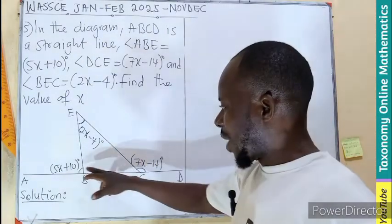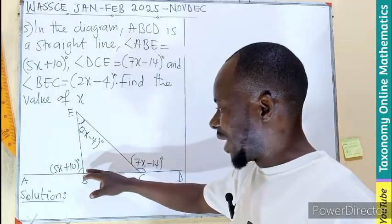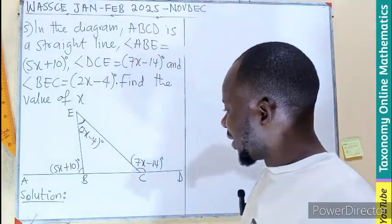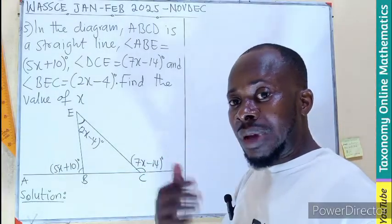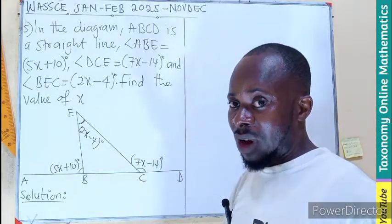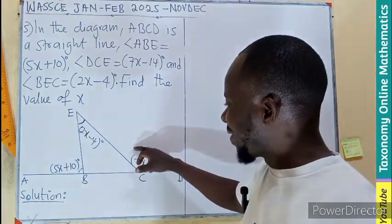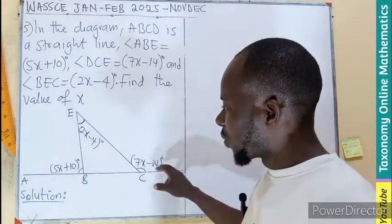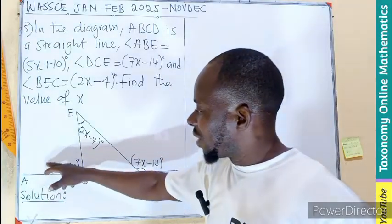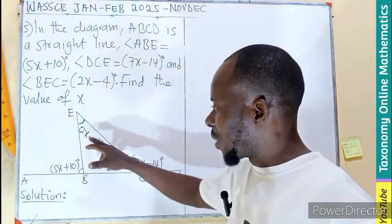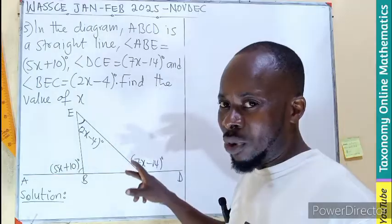Now I can find this. I can also find this since this angle and this are on a straight line. Remember also we have exterior angle theory of a triangle whereby the exterior angle is equal to the sum of two opposite interior angles.